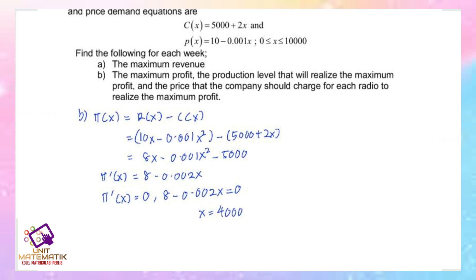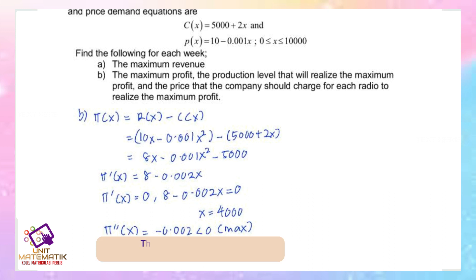Test the value using the second order derivative test. π''(x) = -0.002. Since this is negative, it is a maximum. The conclusion: the profit is maximum at a production level of 4000 units.